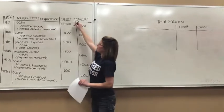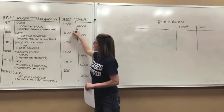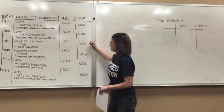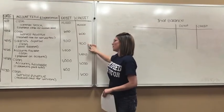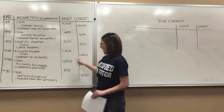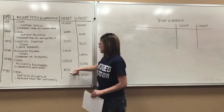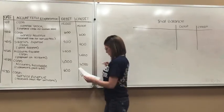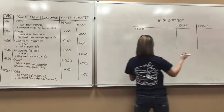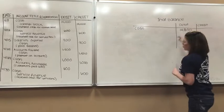Working from that, we start with $15,000 as positive $15,000. Then cash was also a debit for $600, so we add those together. We subtract the $900 since cash was credited there, then subtract the $1,500 which was also a credit. We add the $1,000 which is a debit, and lastly add the $600 which was a debit. After all that math, we get $14,800 as a debit normal balance for cash.